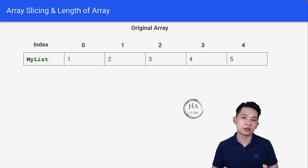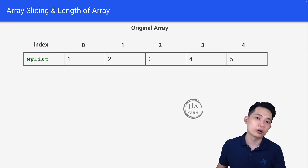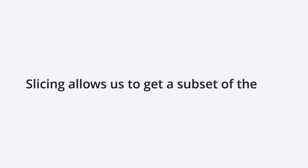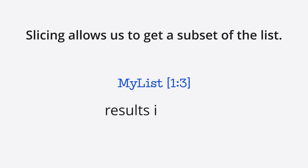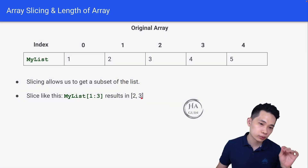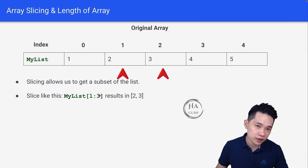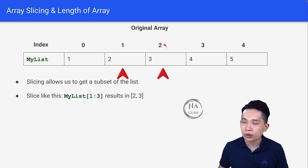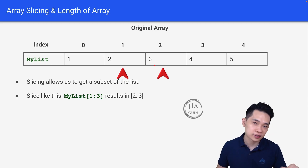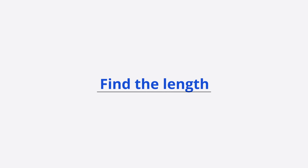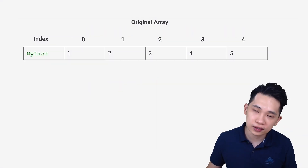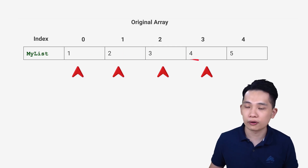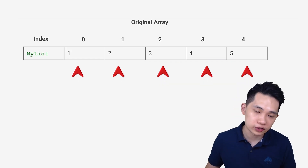Remember that we learned about string slicing in the string manipulation lesson. We can do the same for arrays. Slicing allows us to get a subset of the list. For example, my_list[1:3] will result in [2, 3], because we start from index 1 and end at index 3 minus 1, which means indices 1 and 2. To find the length of the list or array, we use the built-in function len(). len(my_list) will return 5 because there are 5 elements inside the array.